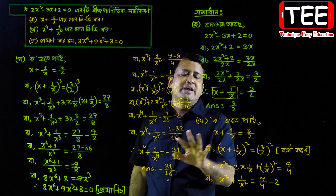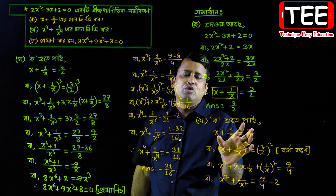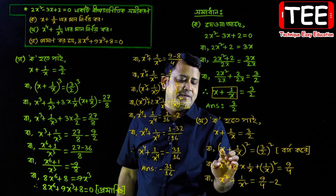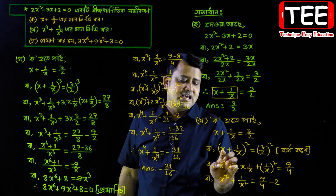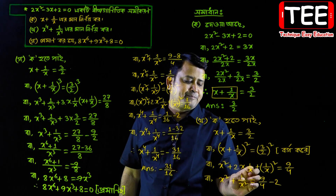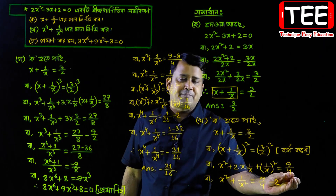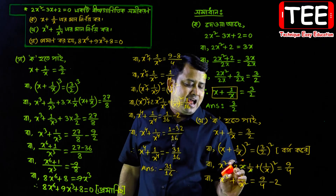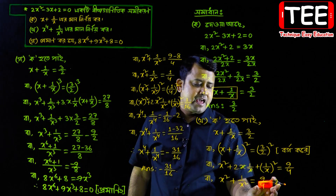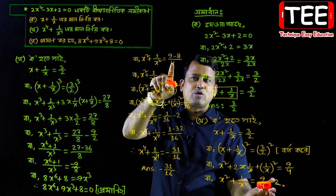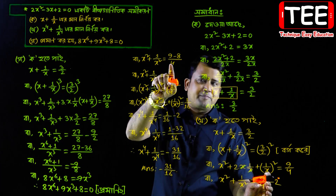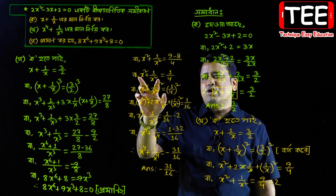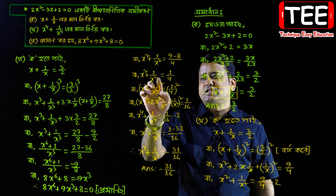This means that x plus 1 is equal to 3 by 2, equal to 4. Now, 1 by x: x square plus 1 by x square is equal to 1 by 4. However, that is the same method.